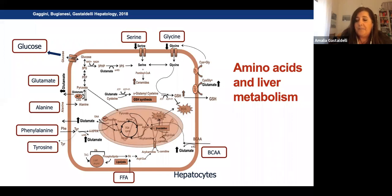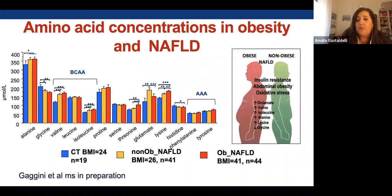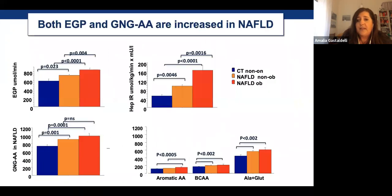Looking at control subjects versus non-obese NAFLD and obese NAFLD, there is an impairment in amino acid concentrations in NAFLD compared to non-NAFLD. Specifically, we saw an increase in glutamate, valine, isoleucine, leucine (which was similar among groups), alanine, and lysine, and a decrease in glycine. Glycine is a very important amino acid — it is often found to be decreased in all insulin-resistant states. The gluconeogenic amino acids alanine and glutamate were highly increased in NAFLD, paralleling the increased hepatic glucose production — probably a sign they are being used as precursors for gluconeogenesis.